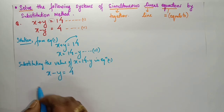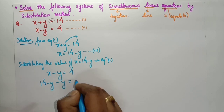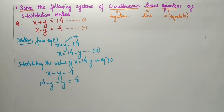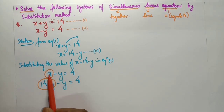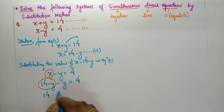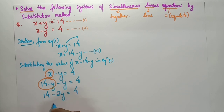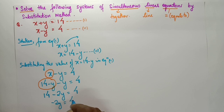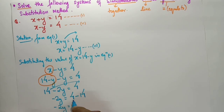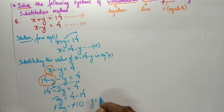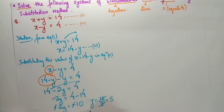We copy equation two: x minus y equals to 4. Now instead of x, I write 14 minus y, giving: 14 minus y minus y equals to 4. The x player has been substituted by 14 minus y — that's substitution. So: 14 minus 2y equals to 4. Taking 14 to the other side: minus 2y equals to 4 minus 14, which gives minus 2y equals to minus 10.